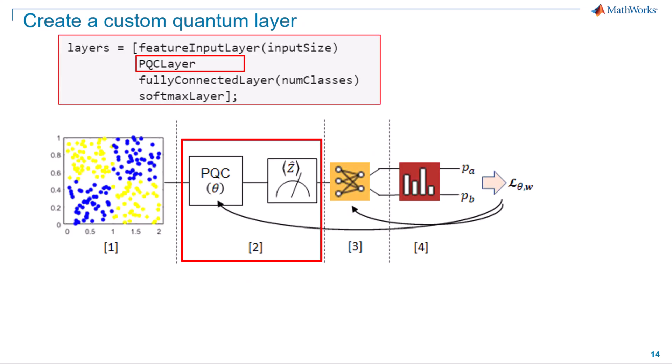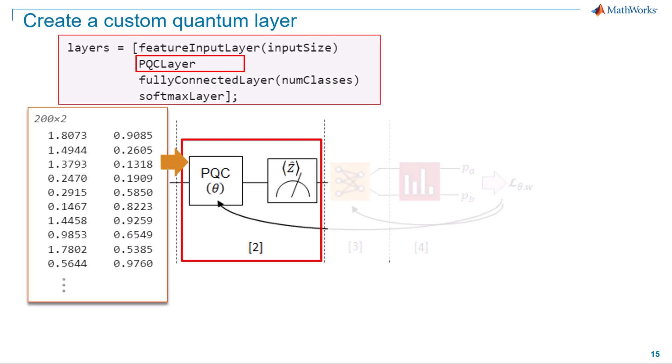Let us explore the custom parameterized quantum circuit or PQC layer which serves as the quantum layer of the network and we also refer to it as the quantum neural network. If you are curious about building custom deep learning layers, our detailed documentation is linked below. I will explain how your data transforms through the PQC layer which is part of the neural network. This PQC layer is a quantum circuit that we will examine. It learns from a dataset to predict whether a given XY pair belongs to the blue class or the yellow class.